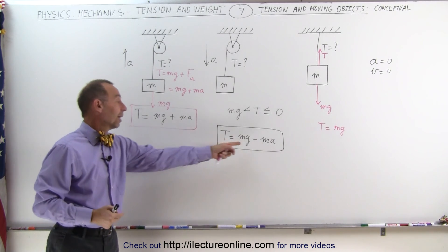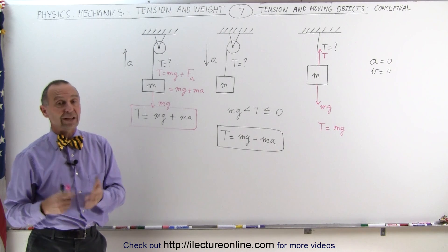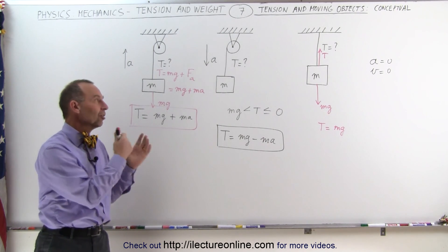And once you understand this, it's either MG plus MA or MG minus MA. Accelerate upward, it's plus. Accelerate downward, it's negative. And that makes it very easy to find the tension in any string in a situation like this.